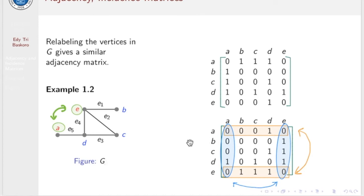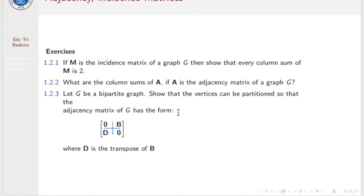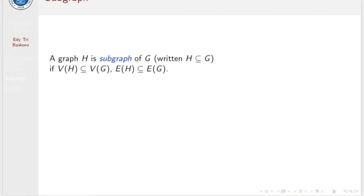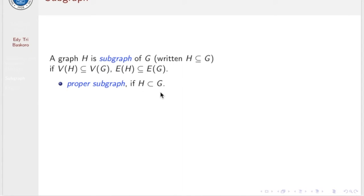From algebra, we know that these two matrices have the same properties. Now, a graph H is a subgraph of G if the vertex set of H is a subset of the vertex set of G, and the edge set of H is a subset of the edge set of G. We call H a proper subgraph of G if H is a subgraph of G and H is not equal to G — meaning V(H) is a proper subset of V(G), or E(H) is a proper subset of E(G).